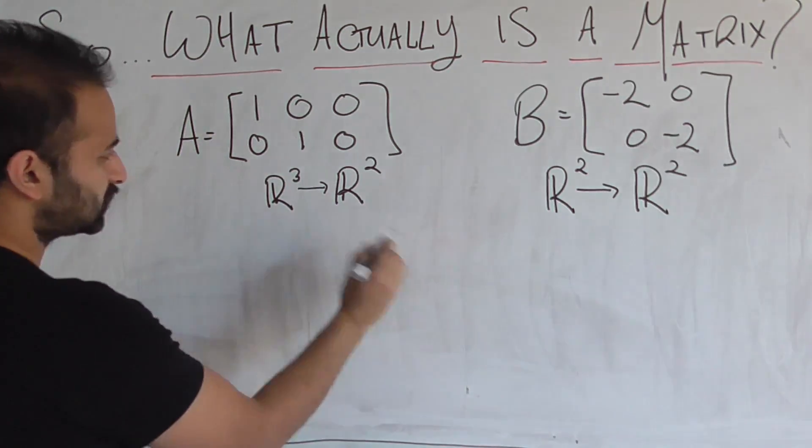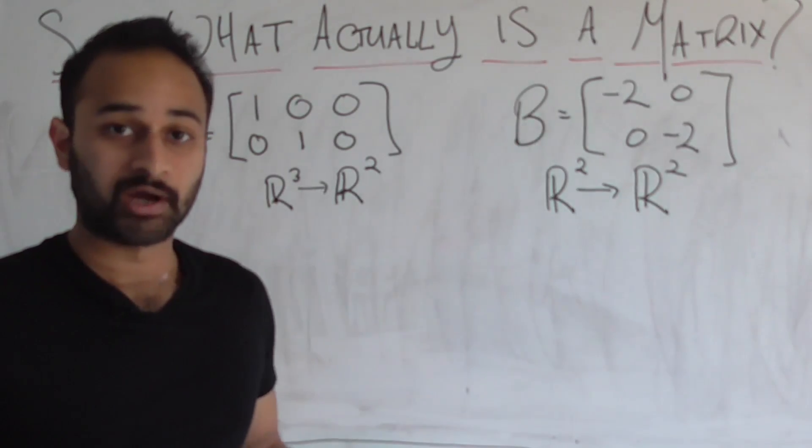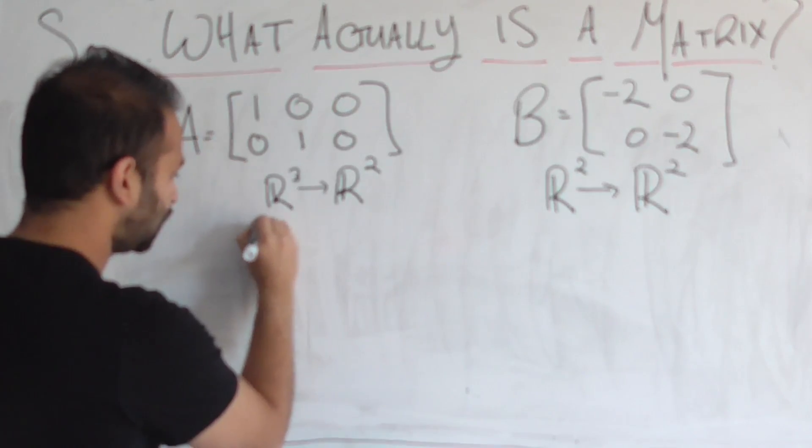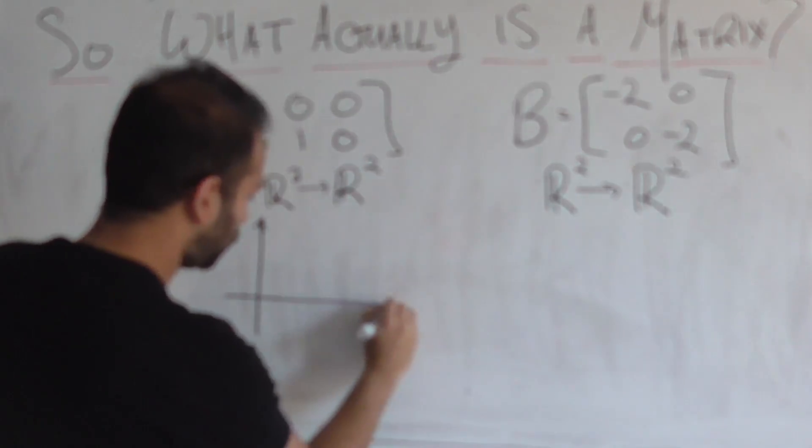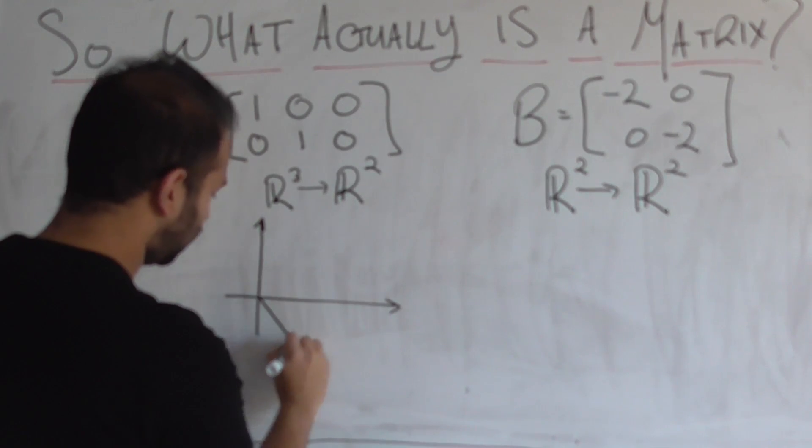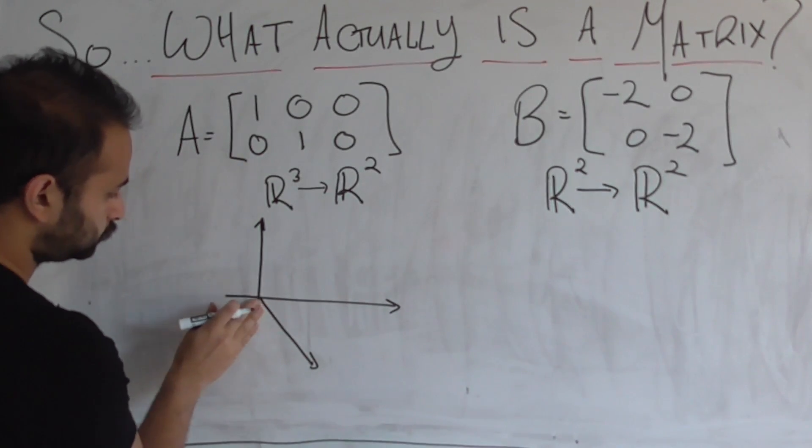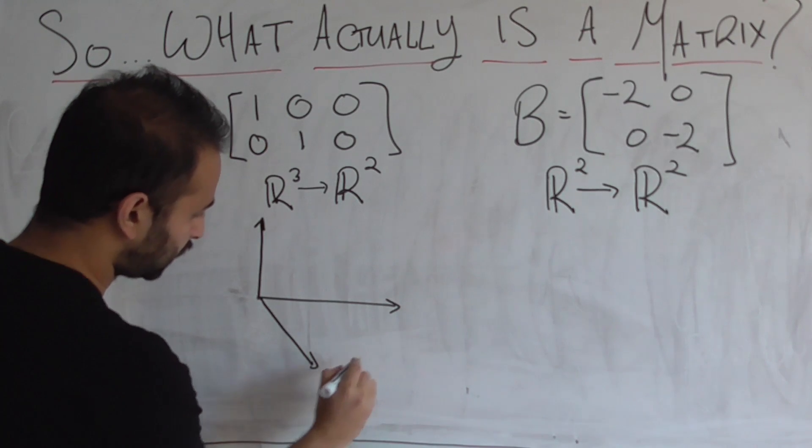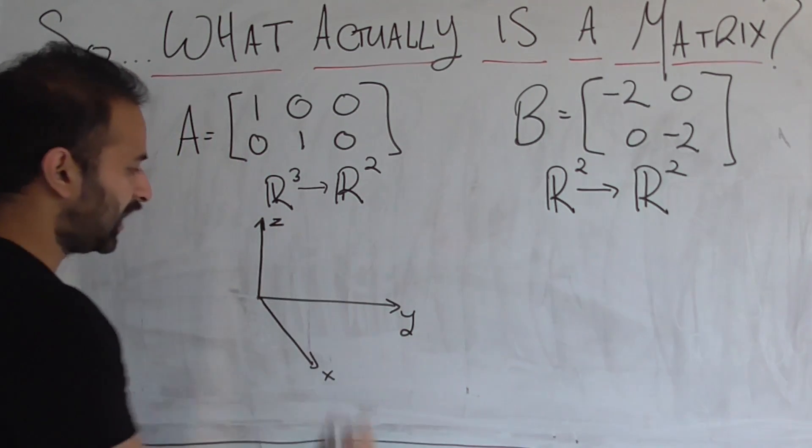Let's, since it's going from three-dimensional space to two-dimensional space, let's try to draw a three-dimensional coordinate axis as best I can. So, and then I'll put one coming like this. So here's the X, Y, and the Z axis.